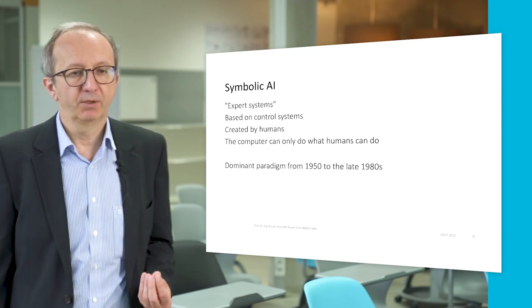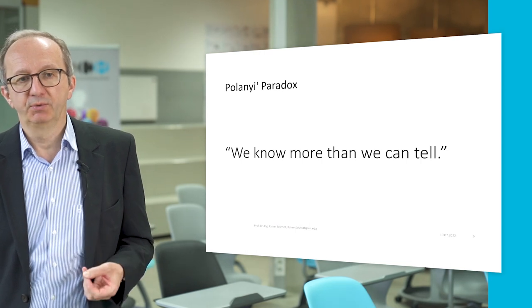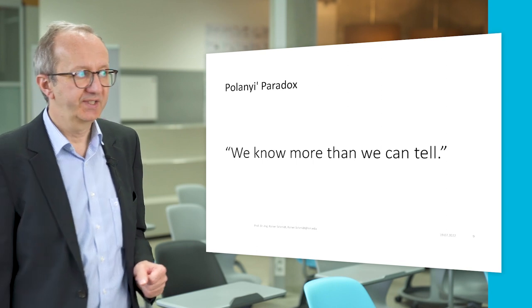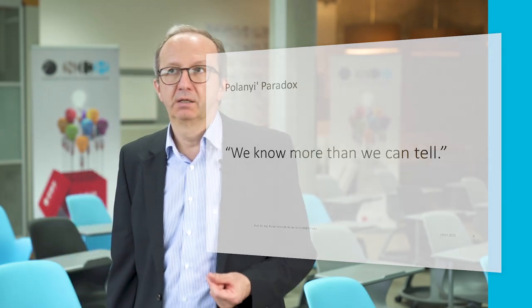Symbolic AI was the dominant paradigm from the 1950s to the late 1980s, but there was skepticism about this approach. The philosopher Polanyi wrote this down in his paradox: we know more than we can tell. Many researchers in AI had this experience — when they interviewed experts, they found that experts often used rational mechanisms only to explain why they had decided a certain way, but their decision had already been made before.